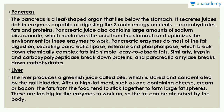The pancreas is a leaf-shaped organ that lies below the stomach. It secretes juices rich in enzymes capable of digesting all three main energy nutrients: carbohydrates, fats, and proteins. This makes it the first organ in sequence to digest all three, since salivary enzymes in the mouth only handle carbohydrates and get inactivated in the stomach's low pH. Pancreatic enzymes include lipase, esterase, and phospholipase for fats; trypsin and carboxypeptidase for proteins; and pancreatic amylase for carbohydrates.